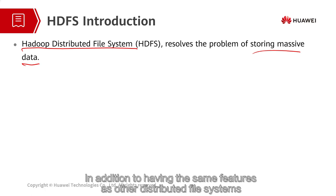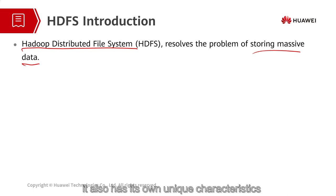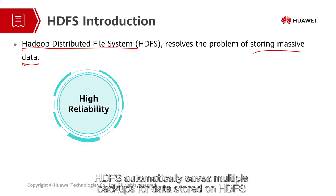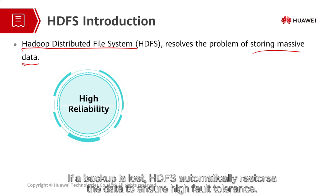In addition to having the same features as other distributed file systems, HDFS also has its own unique characteristics. The first major feature of HDFS is high fault tolerance, or high reliability. HDFS automatically saves multiple backups for data storage. If one backup is lost, HDFS automatically restores the data to ensure high fault tolerance.